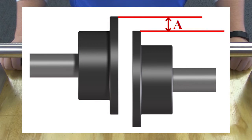For parallel misalignment, measure the offset between the centers of the hubs, as shown.